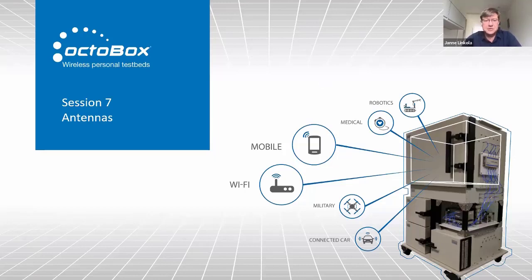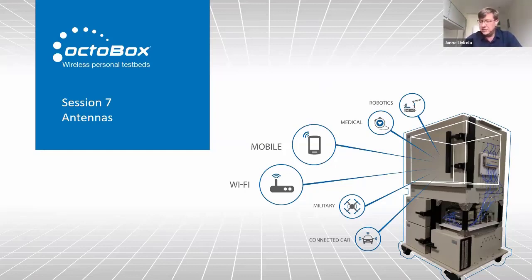Welcome everybody. This is the seventh session of the Octoscope tutorial series. This time we're going to talk about antennas — what are they, what do they do, and some of the details such as gain, polarization, near field, far field, etc. We're really glad that you guys could join us this morning, or whatever the time is in your part of the world.